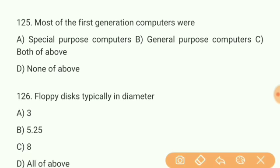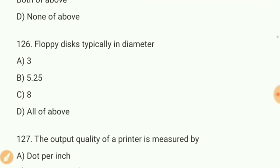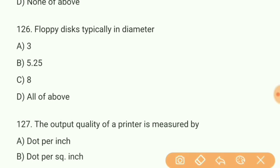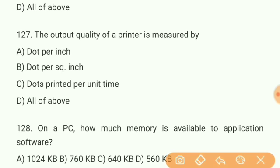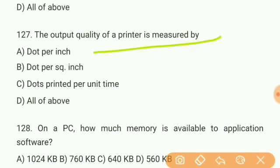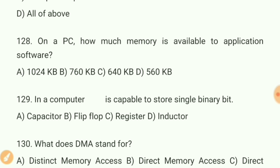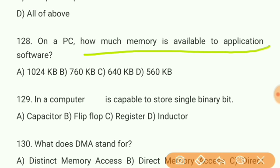Question 125: Most of the first generation computers were what? Answer A — special purpose computers. Question 126: Floppy disk typical diameter — answer B — 5.25 inches. Remember, the typical diameter is 5.25. Question 127: The output quality of a printer is measured by dots per square inch. Question 128: On a PC, how much memory is available to application software? Answer C — 640 KB.